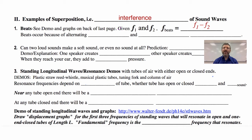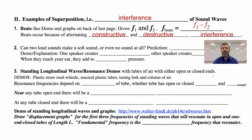Beats occur because of alternating constructive and destructive interference. When you have constructive interference, it gets loud. When you have destructive interference, it gets very soft or goes away entirely. Our next demonstration asks: can two loud sounds make a soft sound, or even no sound at all? If you understood the last demonstration, you could probably figure this out. Make a prediction and we'll check it out.